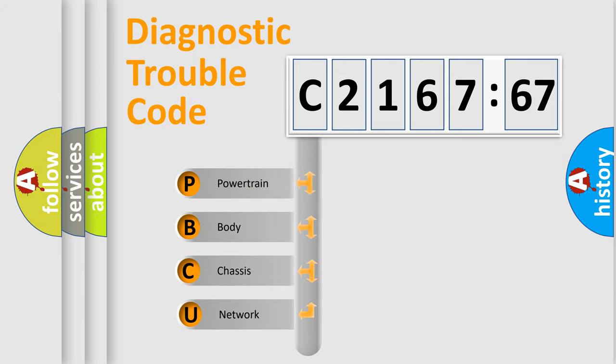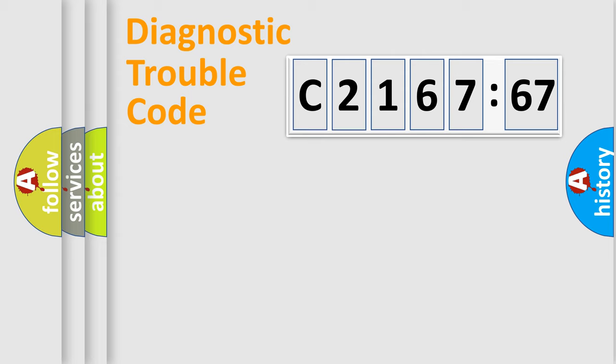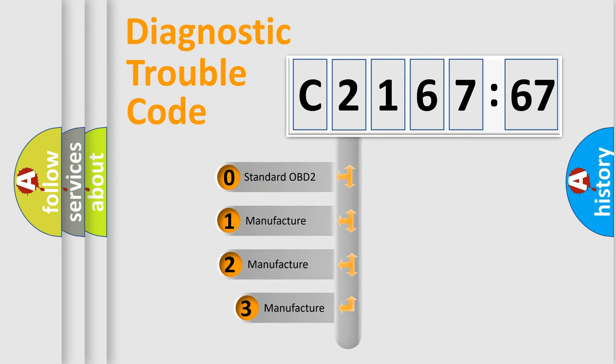First, let's look at the history of diagnostic fault code composition according to the OBD2 protocol, which is unified for all automakers since 2000. We divide the electric system of the automobile into four basic units: Powertrain, Body, Chassis, and Network.